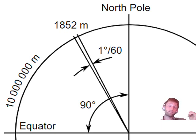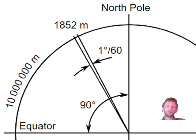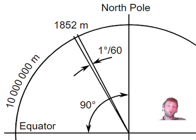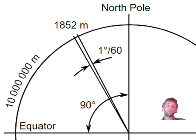So: 1852 meters × 60 × 90 gives approximately 10,000,800 meters, which is very close to our 10 million meter figure shown in the sketch. This confirms the 90 degrees between the North Pole and the equator. Also, 1852 meters equals 6076 feet.